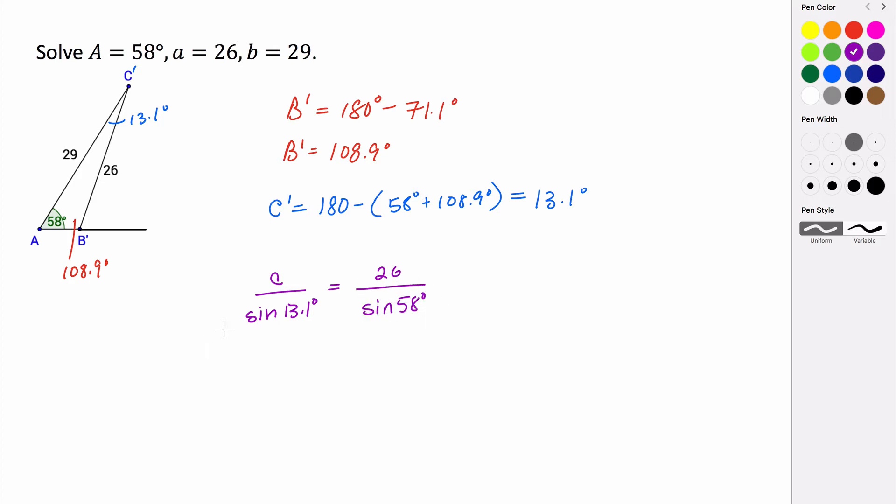Multiply both sides by the sine of 13.1, and we get that C equals 26 times the sine of 13.1 degrees all divided by the sine of 58 degrees. When you plug this into your calculator, you get that the length of side C is about 6.9 units.